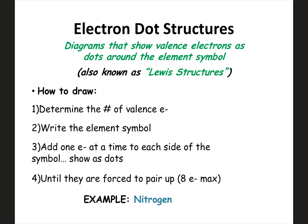Our last form of electron configuration is electron dot structures, also known as Lewis structures or Lewis dot structures. These are diagrams that show the number of valence electrons for an element around the symbol. The steps are: determine the number of valence electrons using the A-group number, write the element symbol, and then add the electrons one at a time as dots to each side of the symbol. Think of the symbol as having four sides — left, right, top, and bottom — and add one electron per side before you're forced to pair up.